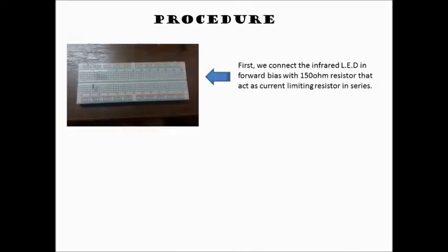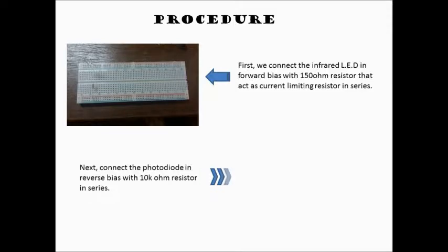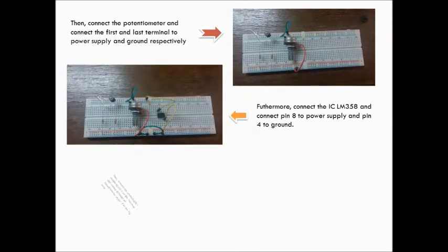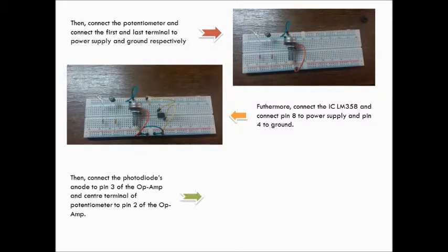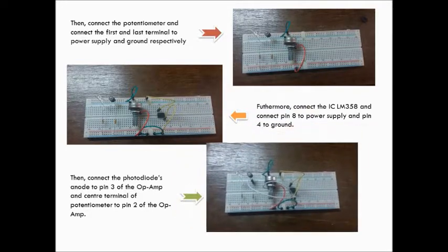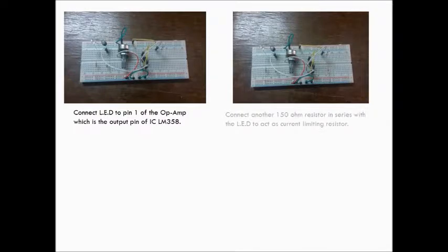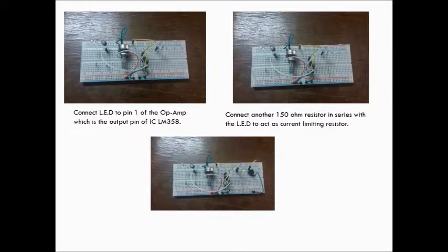First, we connect the infrared LED in forward bias with 150 ohm resistor in series. Next, connect the photodiode in reverse bias with 10 kohm in series. Then connect the potentiometer, connect the first and last terminal to the power supply and ground. Furthermore, connect the IC LM358 and connect pin 8 to power supply and pin 4 to ground. Then connect the photodiode anode to pin 3 of op-amp and center terminal of potentiometer to pin 2 of the op-amp. Connect the LED to pin 1 of the op-amp which is output pin of LM358. Connect another 150 ohm resistor in series with LED to act as current limited resistor.